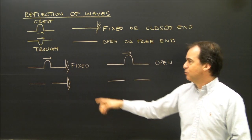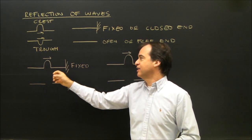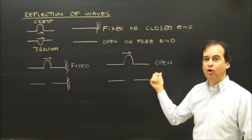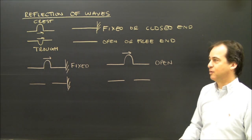What I want to know is what comes back if a crest hits a fixed end. What are its properties when it comes back? If a crest goes to an open end, what are its properties when it comes back?